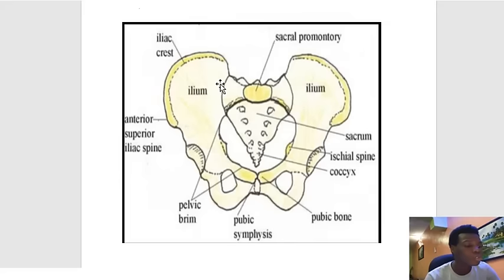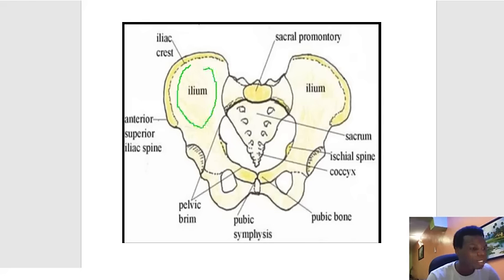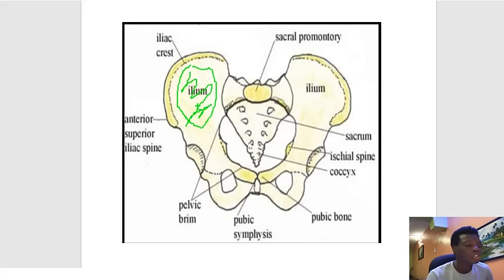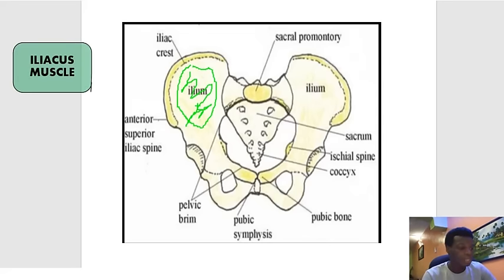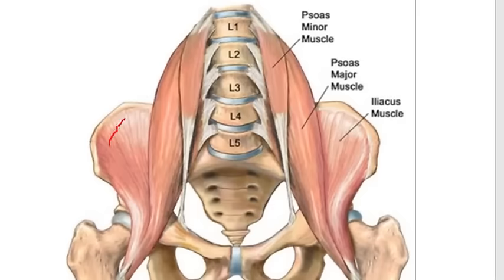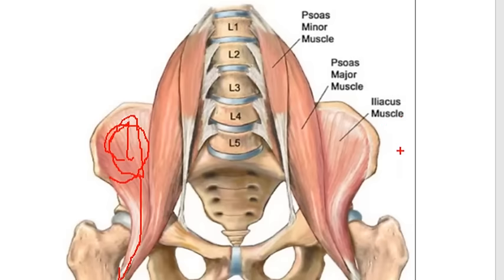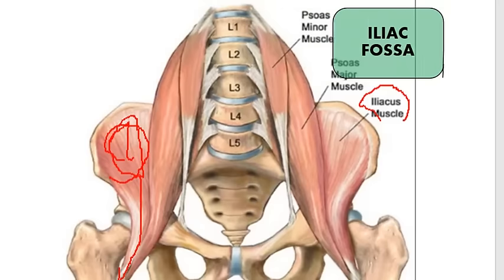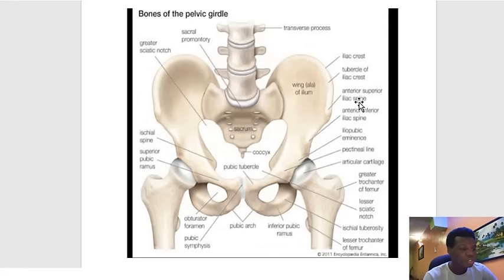Apart from the iliac crest, the wing or ala of the ilium can also be painted. One very important structure associated with the wing is the iliacus muscle. This muscle takes its origin from the wing of the ilium — specifically a part called the iliac fossa, a shallow depression within the wing — and goes down to the femur to insert on the lesser trochanter.